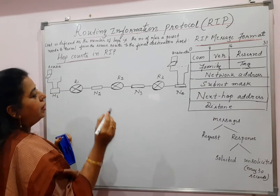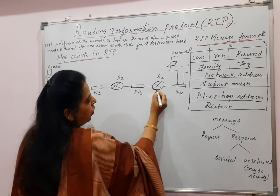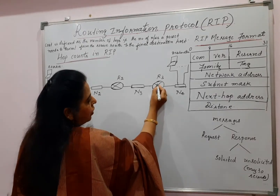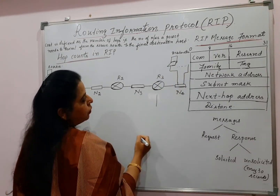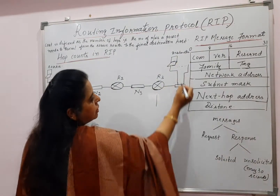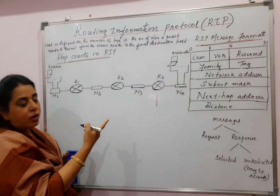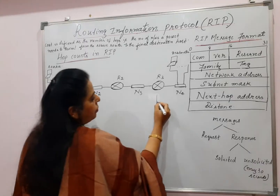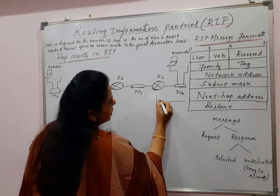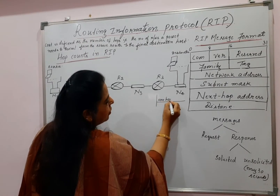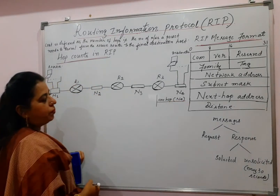Suppose if you have to indicate the number of hops for router R3 to reach the destination host, and the destination host is present in network N4 — how many hops? In this case it is one hop and the network is N4.